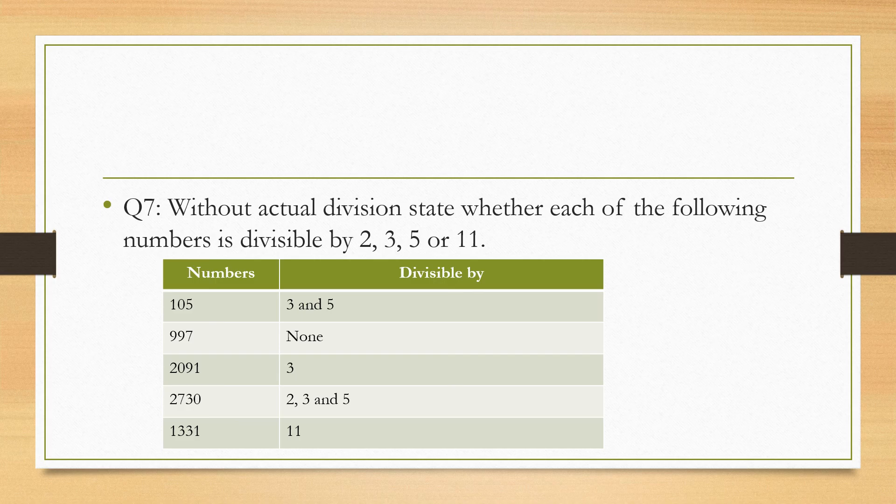To check the divisibility for 3, we need to add this number and see if the number is a multiple of 3. So 5 plus 0 plus 1 equals 6. 6 comes in the table of 3, so yes it is divisible by 3. Now to check if it is divisible by 5, you need to know the last digit shall be 5 or 0. It is 5, and yes it is divisible by 5.